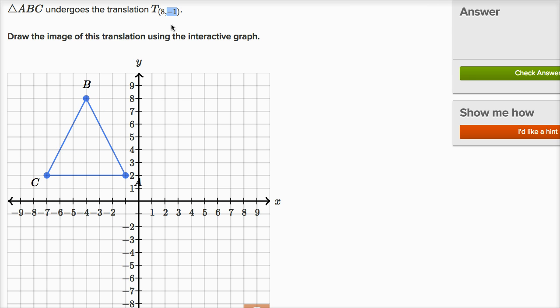So the point B is gonna move eight to the right or its corresponding point in the image is gonna have an x-coordinate eight larger. So right now the x-coordinate is negative four. If you added eight to that, it would be positive four. And its y-coordinate is gonna be one lower. Right now point B's y-coordinate is eight. One lower than that is seven. So in the image, the corresponding point in the image would be right over there. And you see we moved eight to the right and one down.